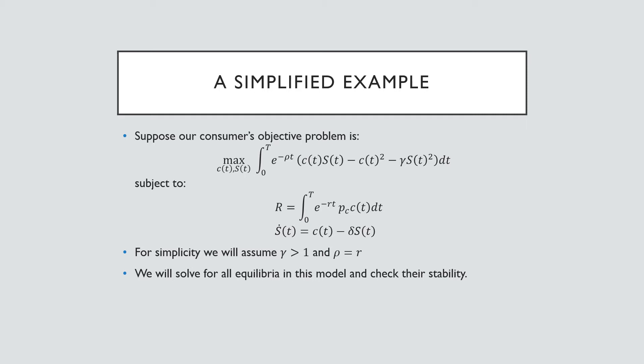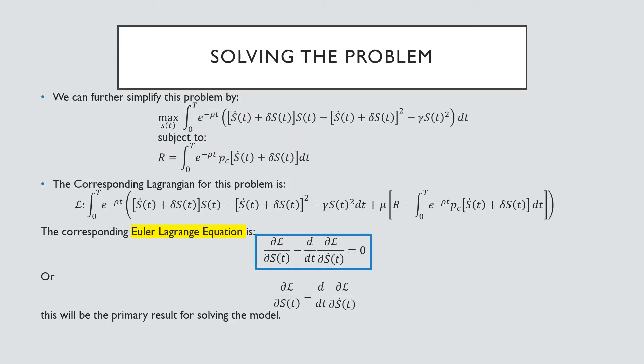We'll solve for all equilibria in this model and check their stability. So we can further simplify this problem by just plugging in our law of motion of capital into each instance where we see our consumption of our addictive good. We just rearrange it and plug it in everywhere, and the corresponding Lagrangian for this problem is as follows. What we're going to use as a primary way to solve this model is the Euler-Lagrange equation, and this will be the primary result that we will use.